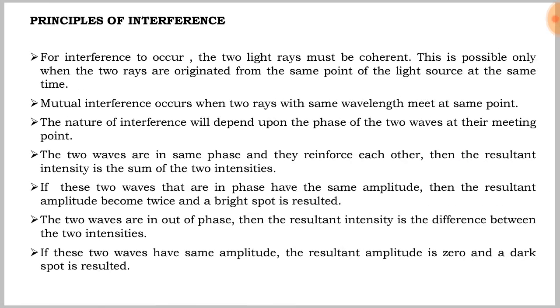Principle of Interference. For interference to occur, the two light rays must be coherent. This is possible only when the two rays originate from the same point of the light source at the same time. Mutual interference occurs when two rays with same wavelength meet at same point.